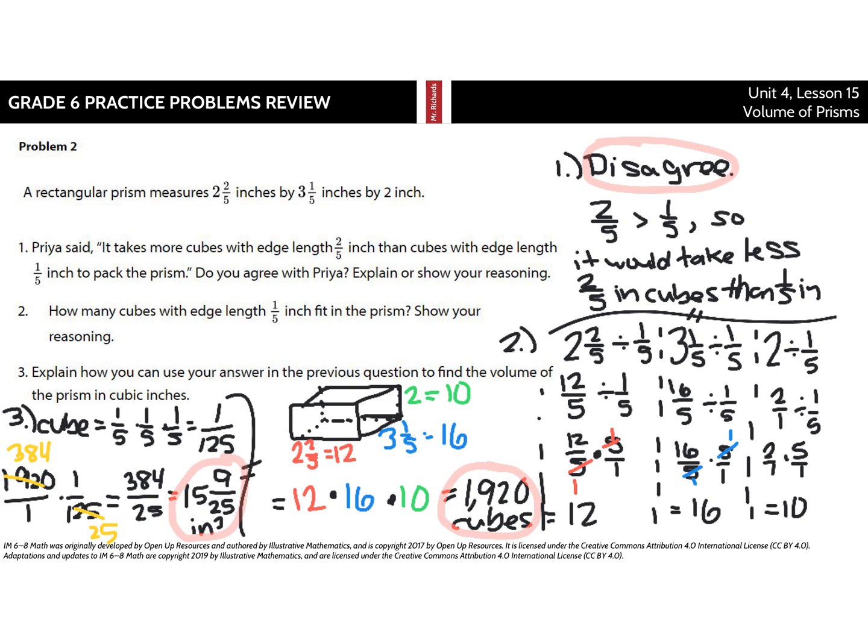And I know we talk in class about how you don't necessarily need to change these from improper to mixed. If you were, you'd get fifteen and nine twenty-fifths cubic inches, but either way, improper or mixed. And so while it looks like there's a lot going on, if you break it down into the individual pieces here, going, okay, this is twelve, this is sixteen, this is ten by dividing these out, it's really a little bit of work, but you get a nice result.